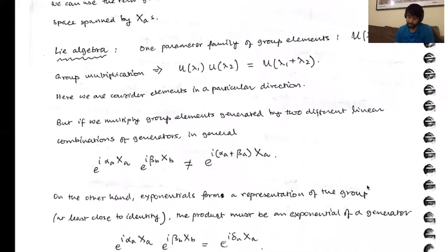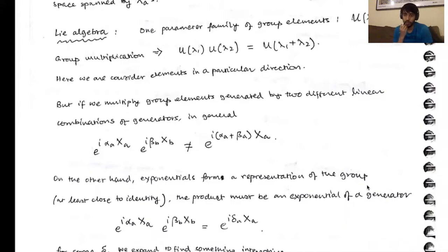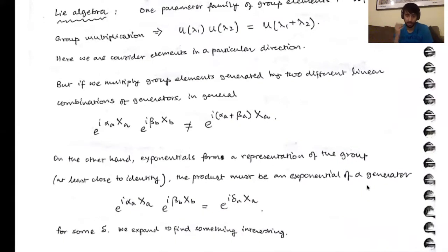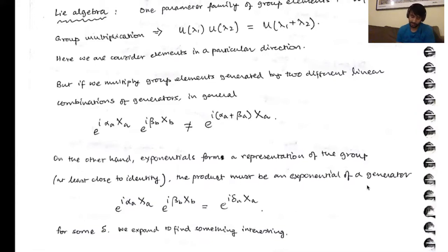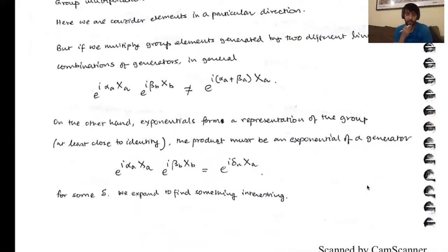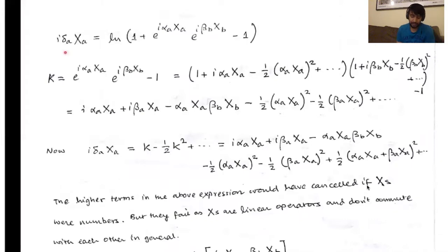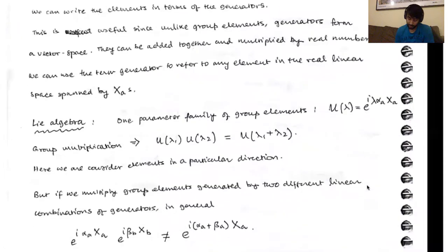On the other hand, the exponential form is a representation of the group, at least close to the identity. So the product of these two guys has to be the exponential of another generator, at least close to the identity. So this is some i delta_A X_A. It may not be alpha_A plus beta_A, but it's clearly something. What we are going to do is expand this and find something interesting. So let's expand: we have i delta_A X_A, and going back, we take the log of this guy.